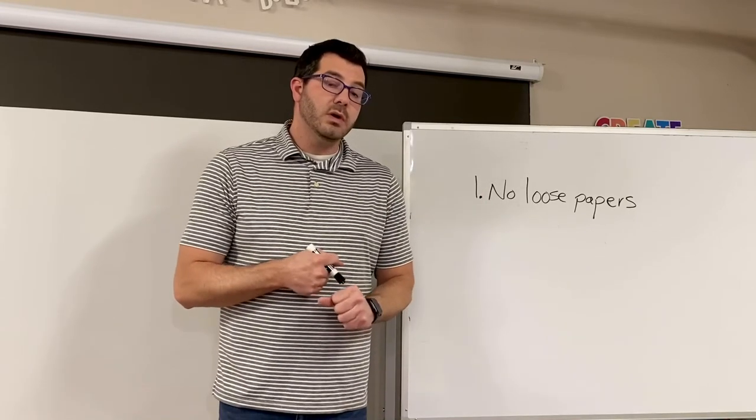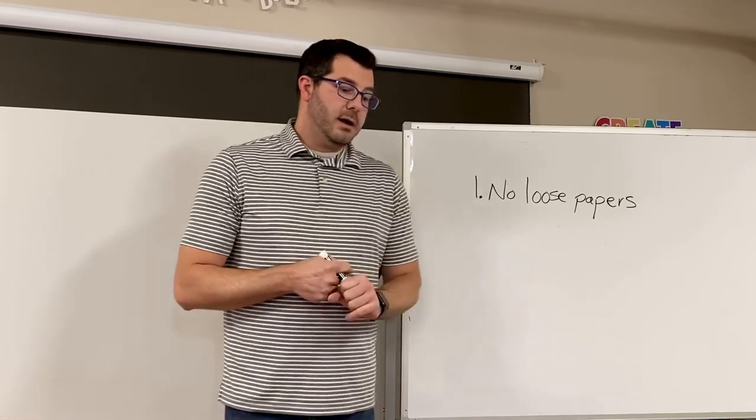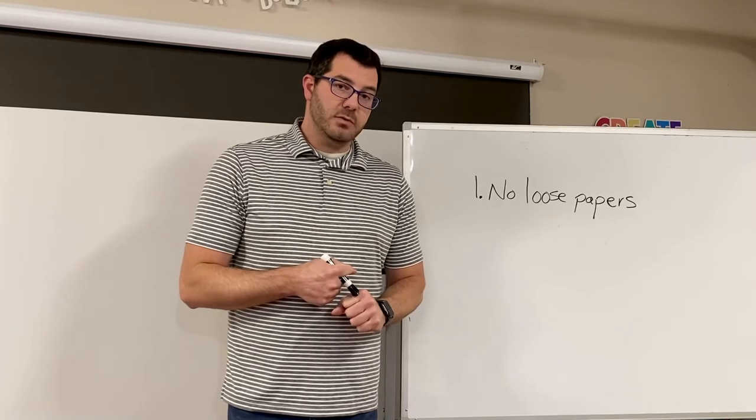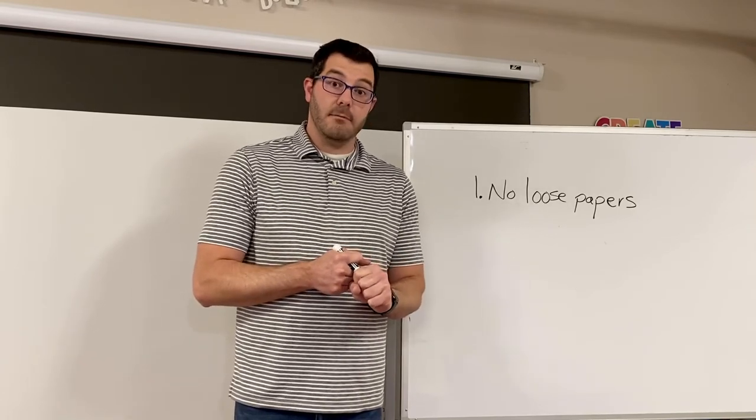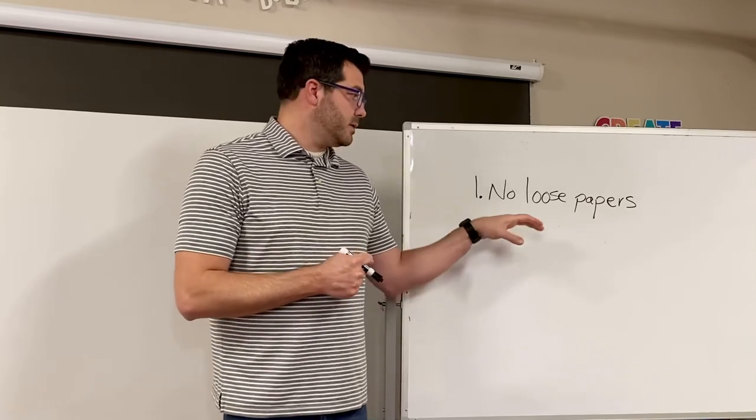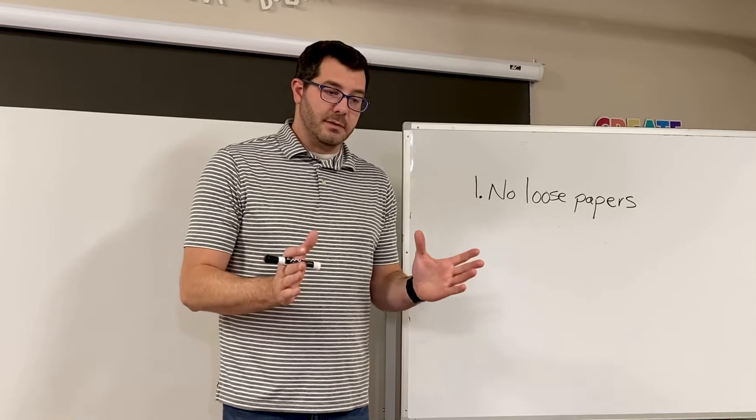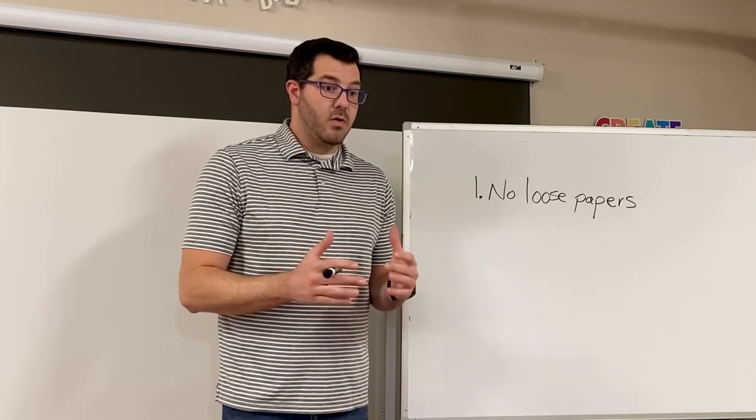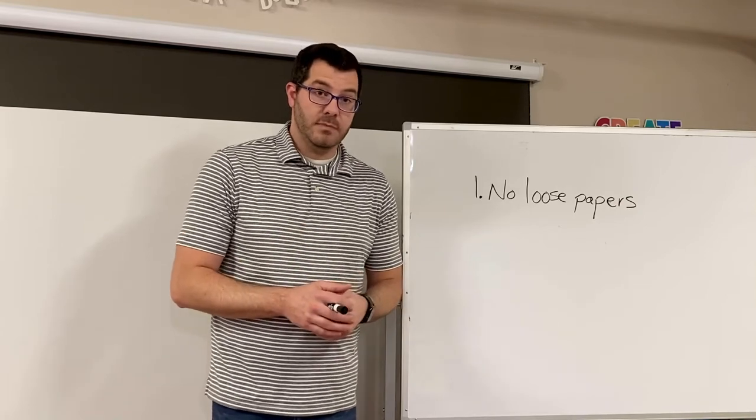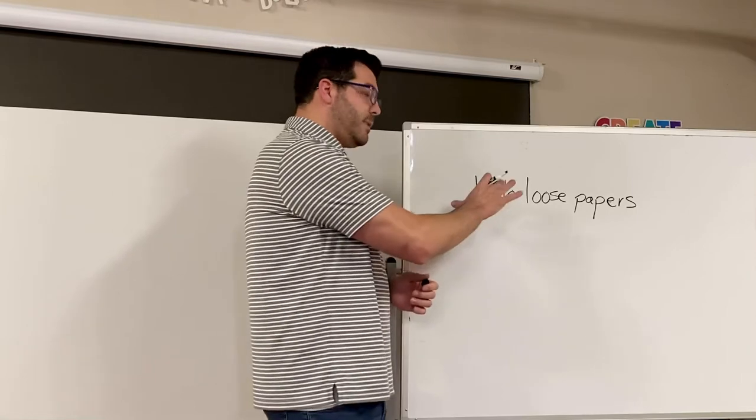You cannot have that. If you decide that you don't want to obey that rule, I will just give you a zero instead of the score that you think you got. So make sure you don't have any loose papers. Everything goes away. The only thing you should have out on your desk is something to write with. If you don't have anything to write with, ask a neighbor if they have one, or I guess you're doing your test in color pencil.